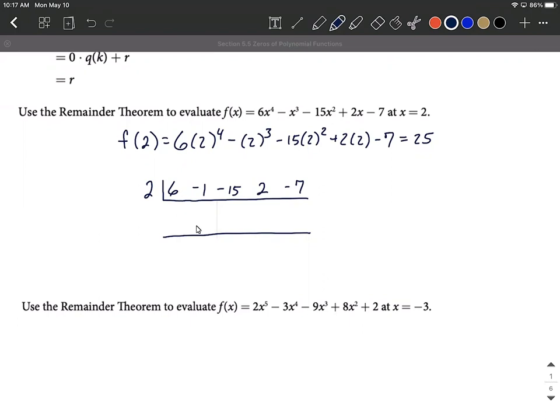All right, so synthetic division, the 6 comes down. And then our process goes, we multiply. So 2 times 6 makes 12. And then we add vertically. So negative 1 plus 12 makes 11.